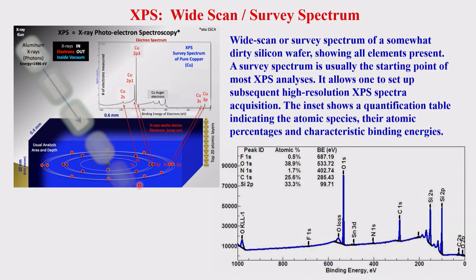Converting from kinetic energy to binding energy: the binding energy equals the X-ray energy minus kinetic energy minus the work function. Looking at the survey spectrum on the slide, the x-axis shows binding energy. You can see peaks from copper — copper 2s, copper 2p, copper 2p3/2 — as copper impurity present at the surface. There is also an Auger peak which can be disregarded.